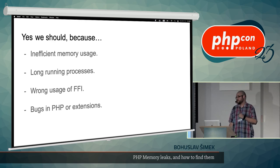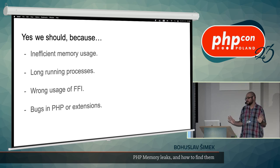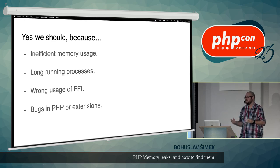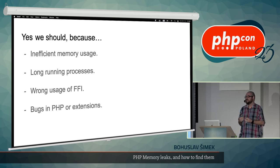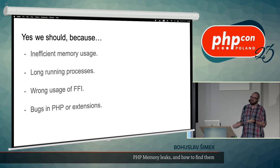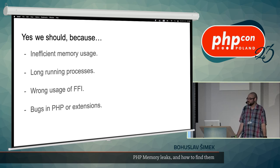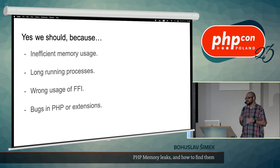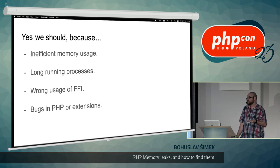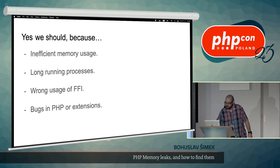Another source of problems is wrong usage of FFI — the foreign function interface — which allows you to directly call C code from PHP. Using FFI, you can very easily create a memory leak, not because of PHP itself, but because you may not properly read the documentation or account for how C handles memory. Also, there can be bugs in PHP or in extensions. The quality assurance of PHP is rather good, so we should usually not blame PHP. Some exotic extensions, however, may have memory leaks if they weren't properly tested.